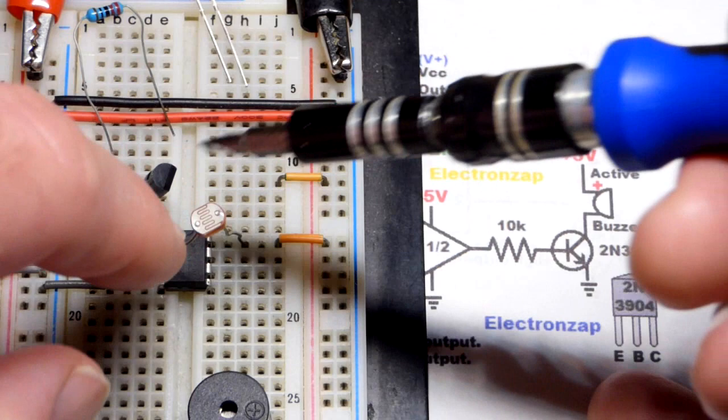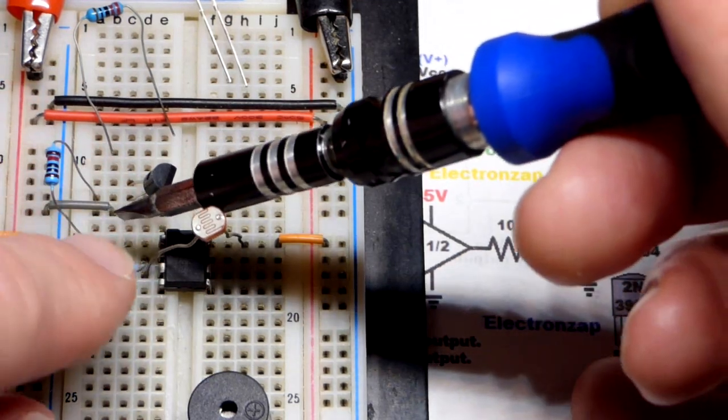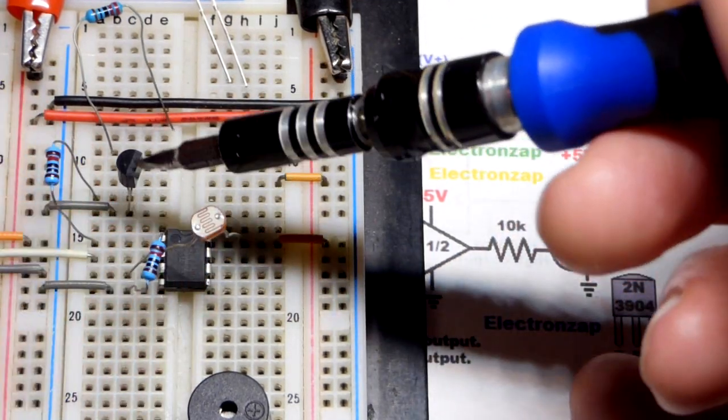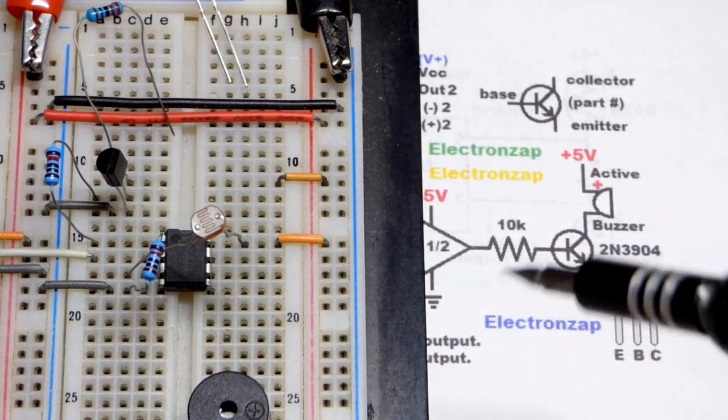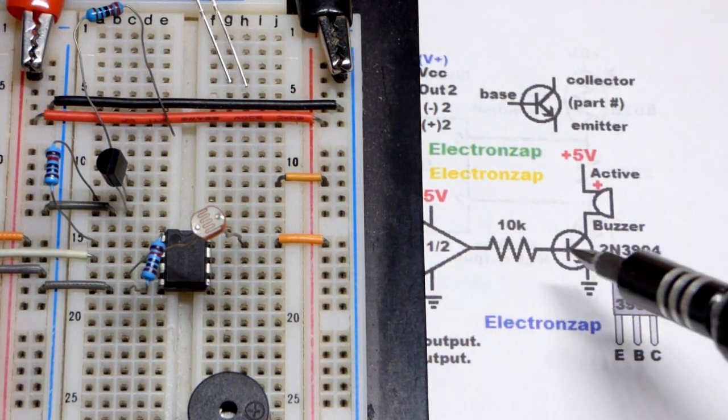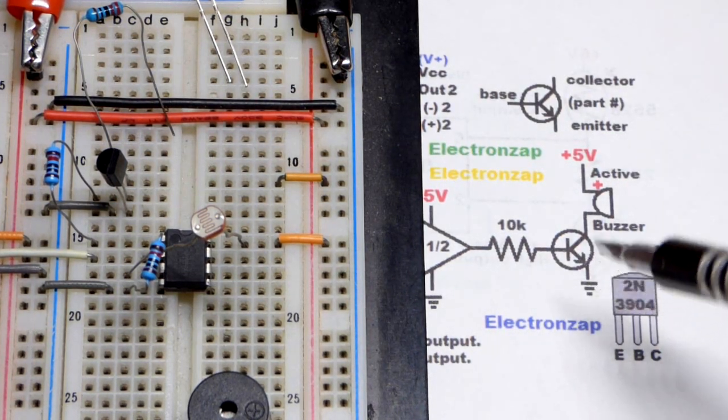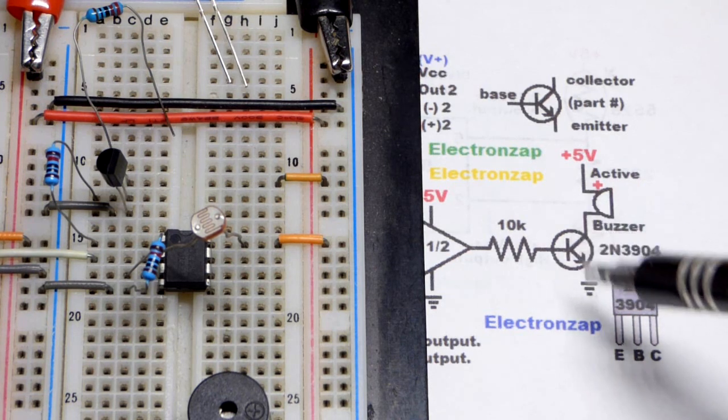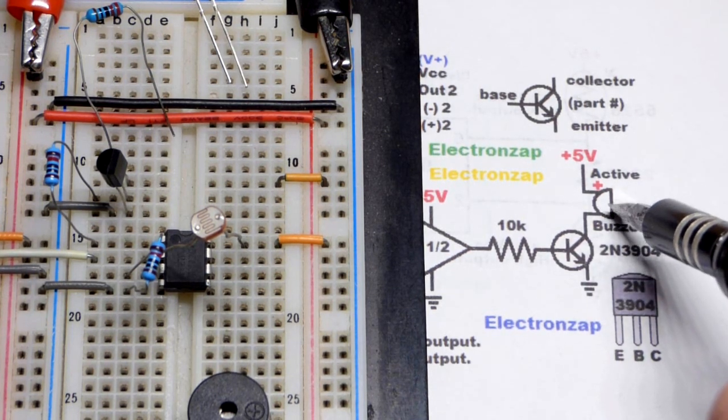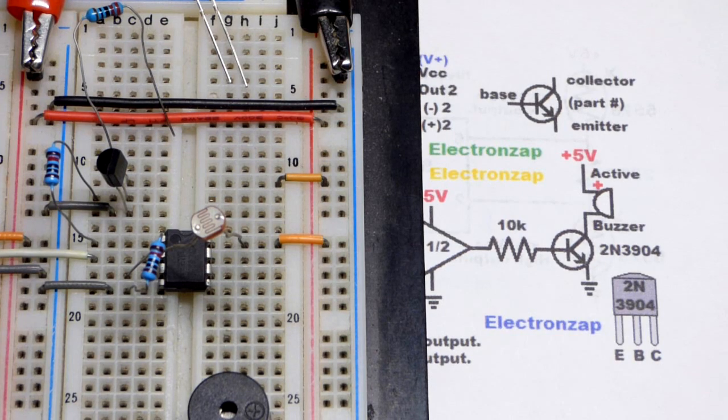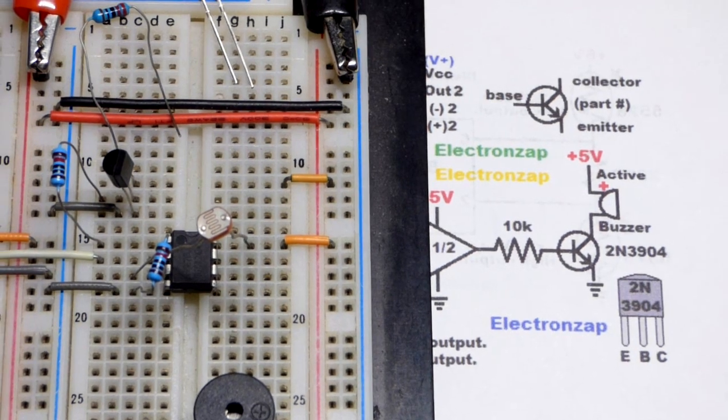The output there, 10,000 ohm resistor, the output is the top pin right there. That turns the transistor on and off. A small current through a base to emitter allows many times the current from collector to emitter. The buzzer needs somewhere around, I think, 25 milliamps of current approximately. Not too bad.